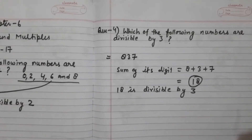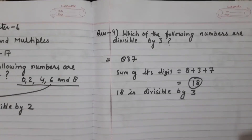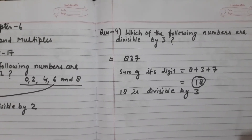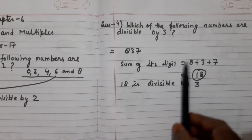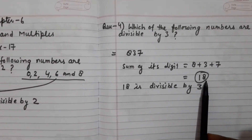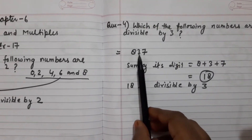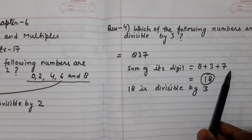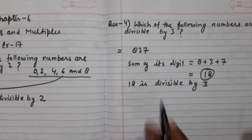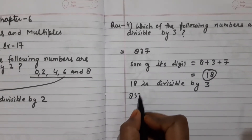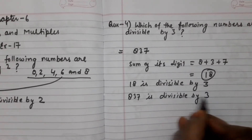Next question: which of the following numbers are divisible by 3? A number is divisible by 3 if the sum of its digits is divisible by 3. The number is divisible by 3.